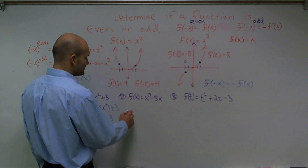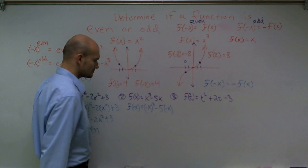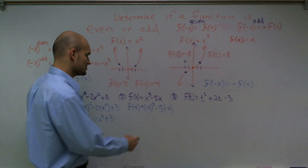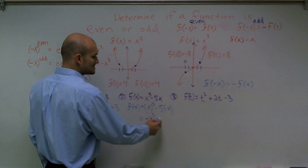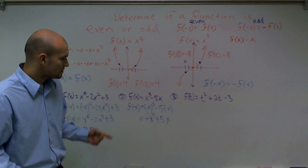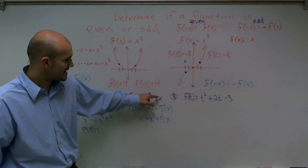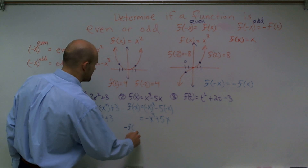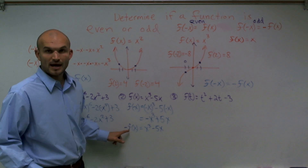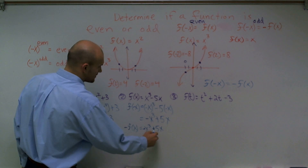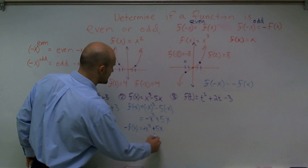For the next one, I plug in negative x and get negative x cubed minus 5 times negative x. Any number raised to an odd power produces an odd result, so this gives negative x cubed. Now negative x times negative 5 gives positive 5x. Is this my original f of x? No — x cubed is negative and negative 5x is now positive. Does it produce negative f of x? Negative f of x is just x cubed minus 5x multiplied by negative 1, making it negative x cubed plus 5x. That matches my result. Therefore this function is odd.